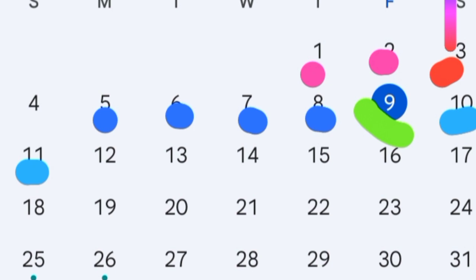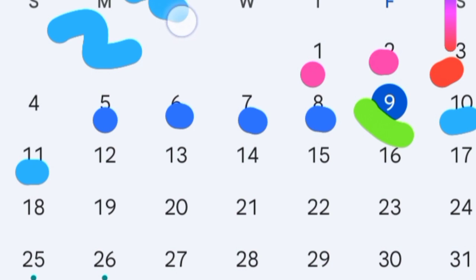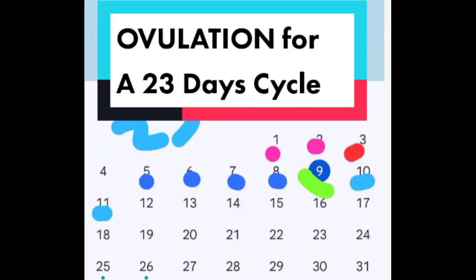So the fertile window is from the 5th, 6th, 7th, 8th, 9th, 10th, and 11th — remember the 9th is the ovulation day. This is for a 23-day cycle. Watch our next video to know how a 24-day cycle will look like. Thank you very much.